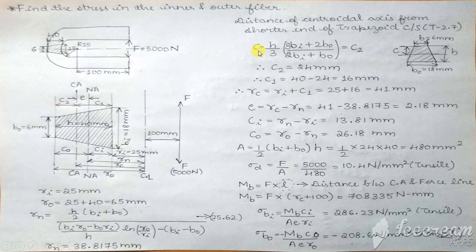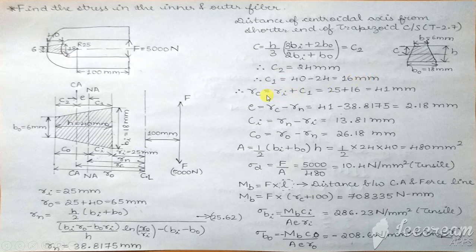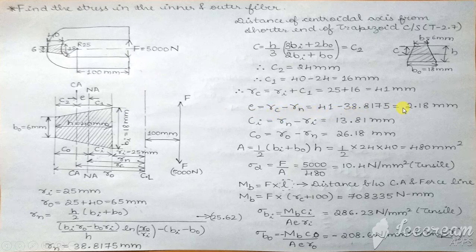So whatever value of C we find, that is C2 in this diagram. We get C2 = 24 mm. C1 is the total depth minus C2, giving C1 = 16 mm. RC is Ri plus C1. E is the eccentricity, that is RC minus Rn, which gives E = 2.18 mm.